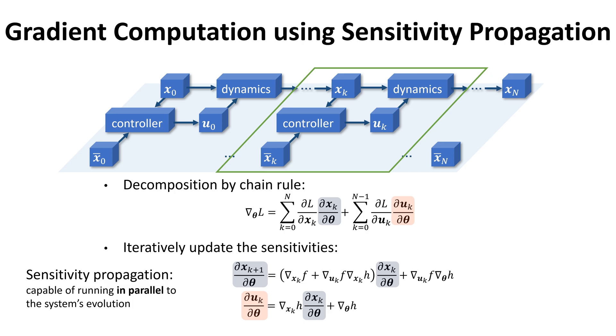We use sensitivity propagation to iteratively update the sensitivities. The coefficients are the Jacobians of the dynamics and controller, which can be obtained using autodifferentiation online. They are evaluated at the collected data from a physical system.